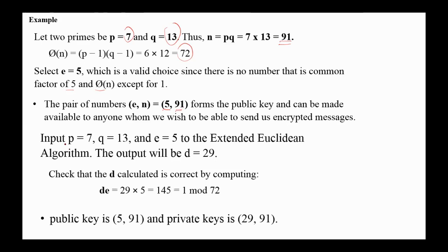By applying p equals 7, q equals 13, and e equals 5 to the extended Euclidean algorithm, the output will be d equals 29. We can check that d was calculated correctly by computing d times e mod phi, which is 1. So the private key is (29, 91) and the public key is (5, 91). As a receiver, I keep the private key secret, and I can give the public key to anyone whom I want to communicate with.